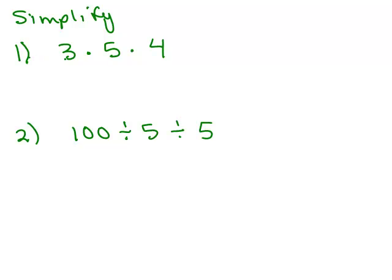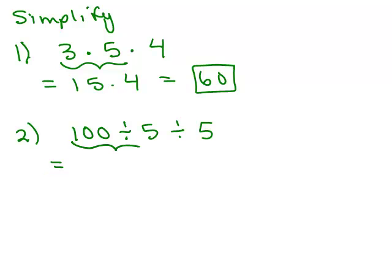All right, let's do number 1. So I have 3 times 5 times 4. If we use the convention, we multiply those two numbers first. So that's 15 times 4. And 15 times 4 is just 60. All right, second one, we only have division. And so we just go left to right. 100 divided by 5 is 20. And then I still have to do divided by 5. And then 20 divided by 5 is 4.